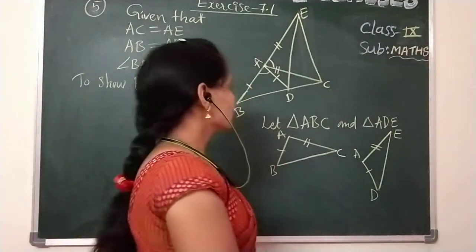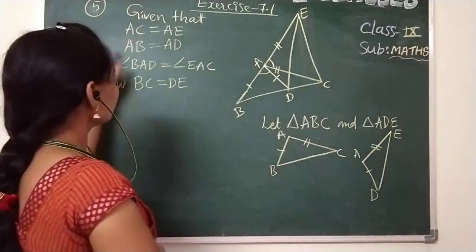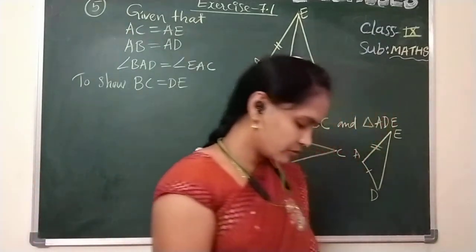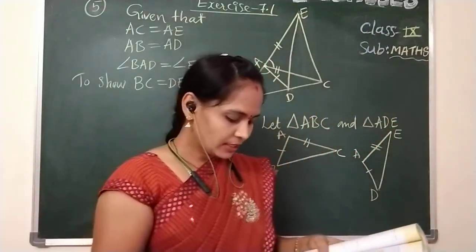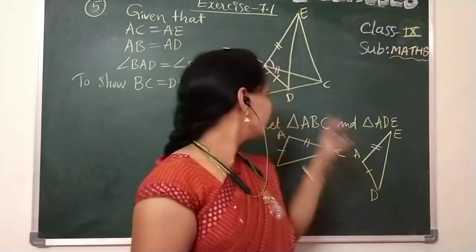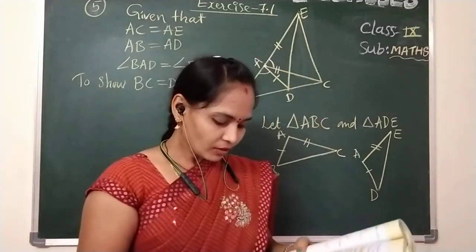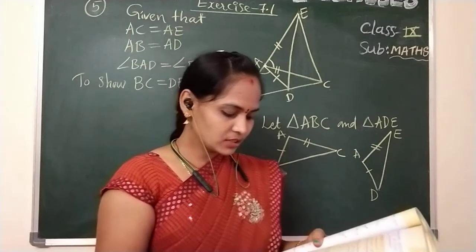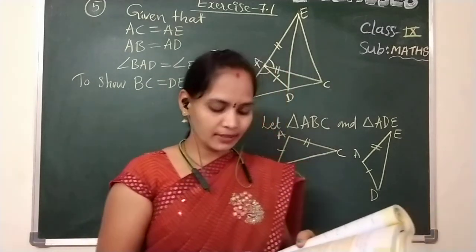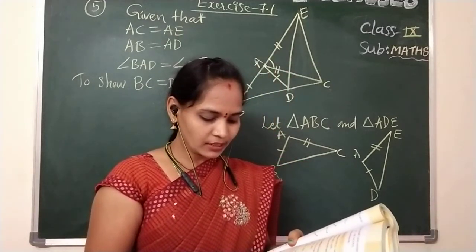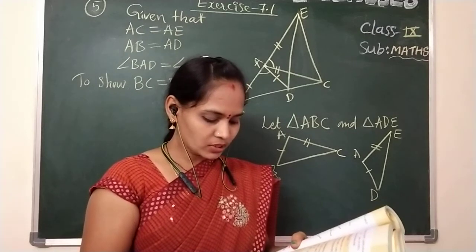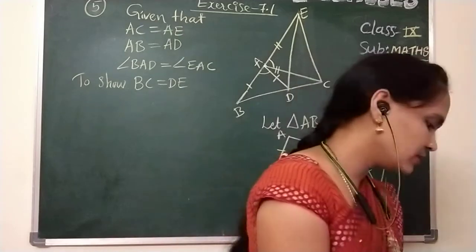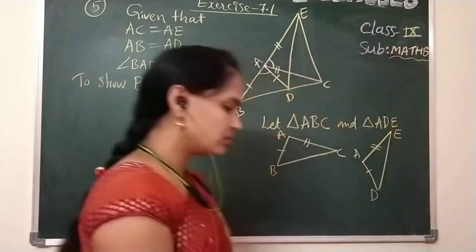In exercise 7.1, fifth question, I am going to explain. In this question, first I am reading the question. In the given figure, AC is equal to AE, AB is equal to AD, and angle BAD is equal to angle EAC. Show that BC is equal to DE.